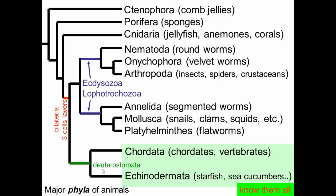That's the deuterostome — 'stome' for mouth. One of the ways we actually knew these were very distinct groups before we had our molecular phylogenies was from the sequence of developmental events.